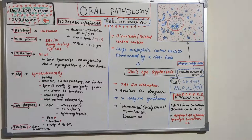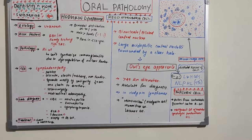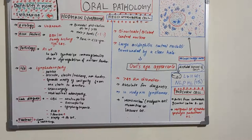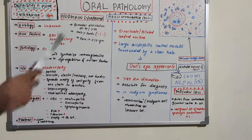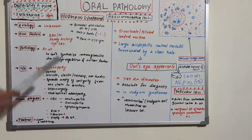So the two hematopoietic malignancies are leukemia and lymphoma. Today's class is about Hodgkin's lymphoma. Lymphomas are malignant tumors of the lymphoid system, specifically of lymphocytes or their precursor cells — essentially, cancer of the lymphatic system. There are basically two types of lymphomas: Hodgkin's lymphoma and non-Hodgkin's lymphoma.